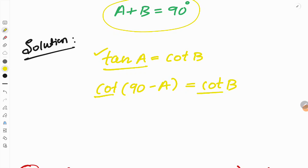When the cot function is equal on both sides, we can equate the angles. That means 90 minus A equals B. Rearranging, 90 equals B plus A, which is A plus B. Therefore A plus B equals 90 degrees.